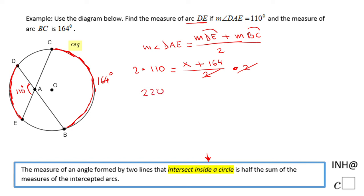So for finding x, I'm going to multiply by 2 on both sides, and I have here 2 times 110, that will be 220, equals x plus 164. And the last thing I'm doing for finding x is subtracting 164, which is going to be 56.